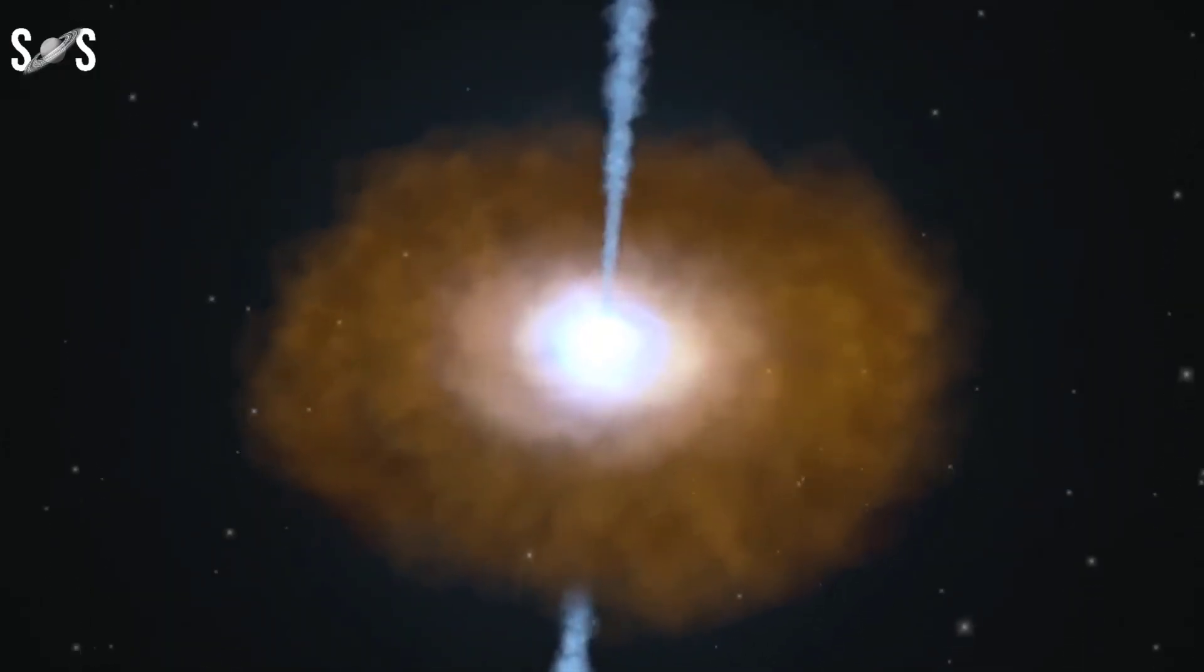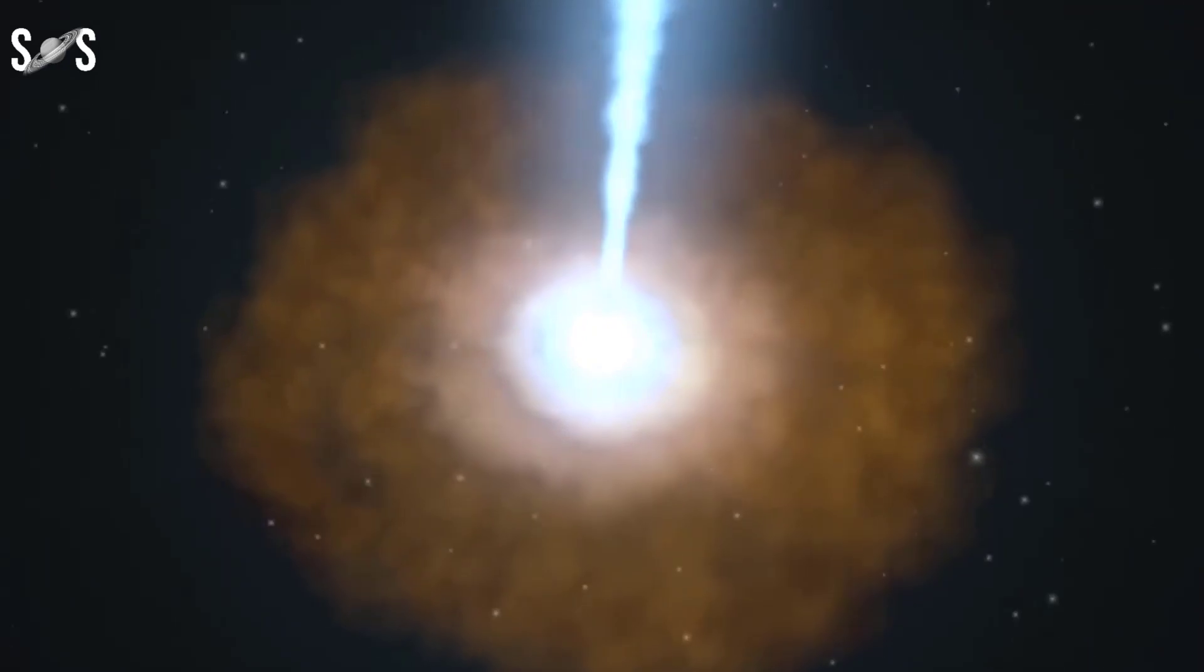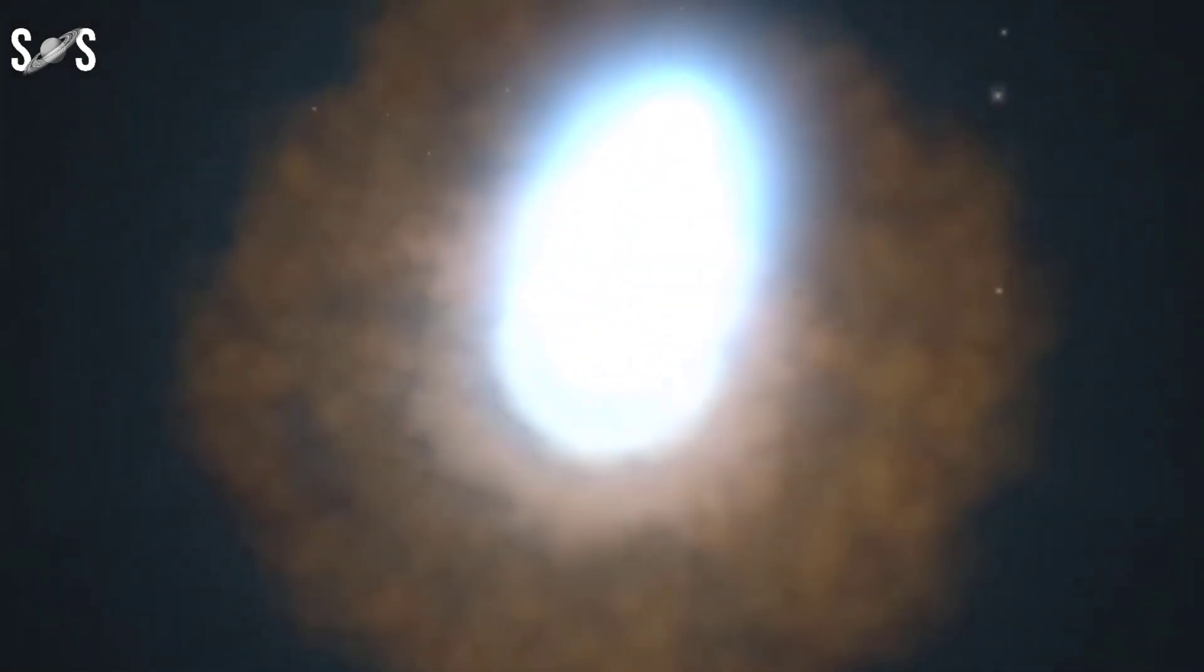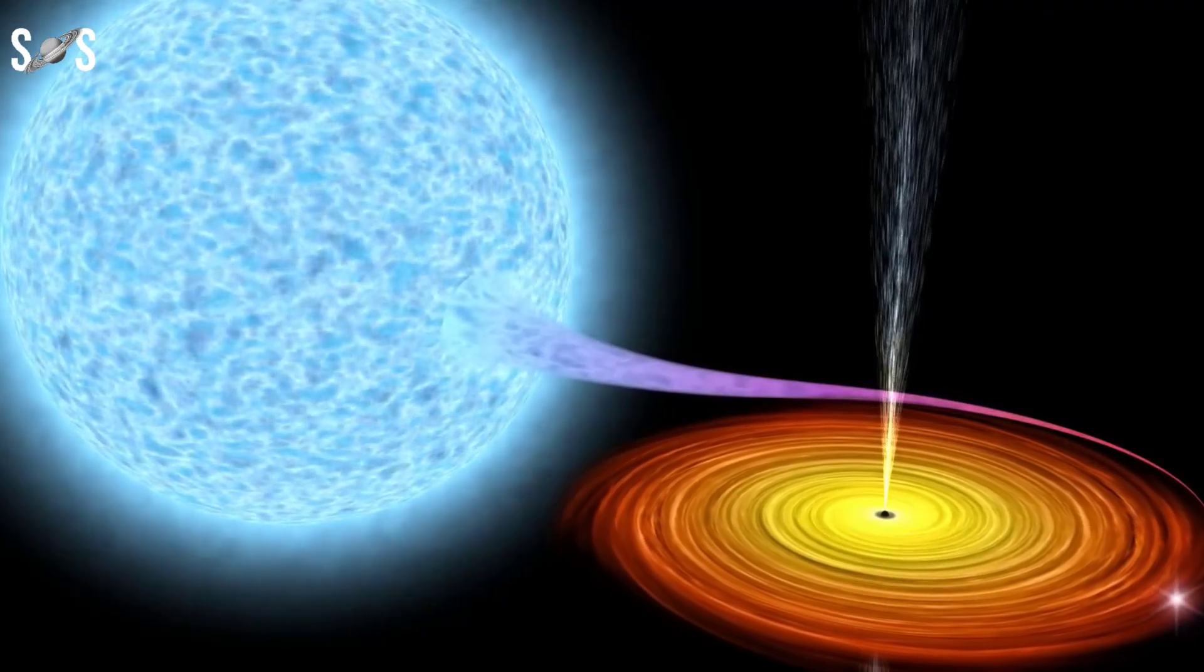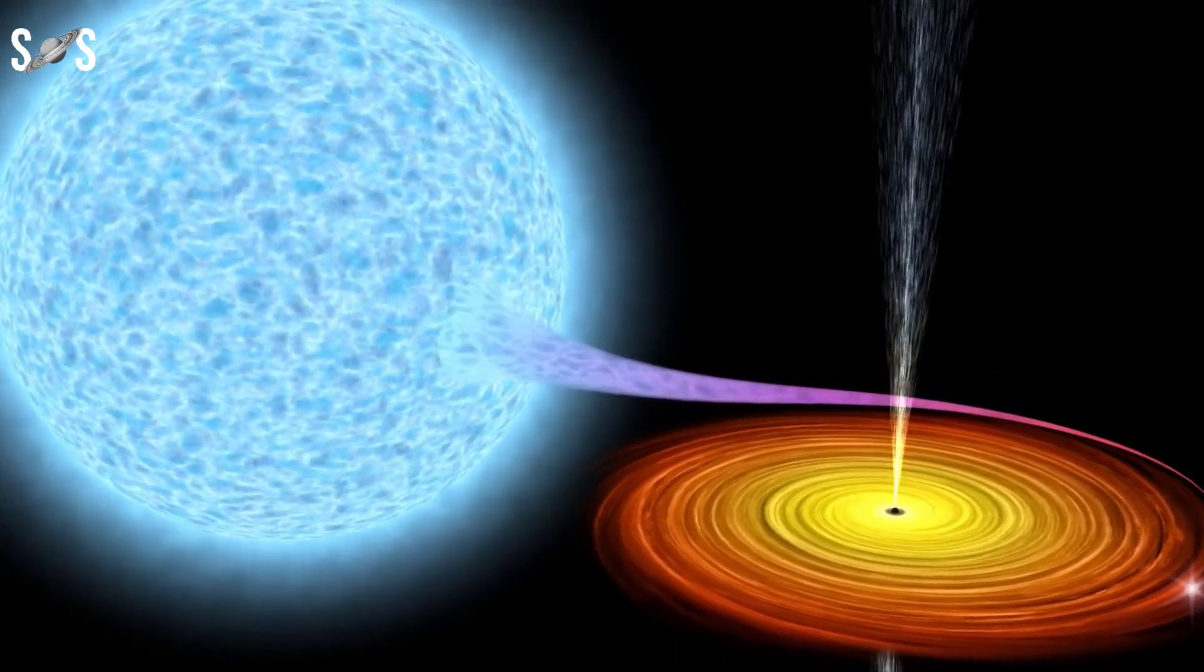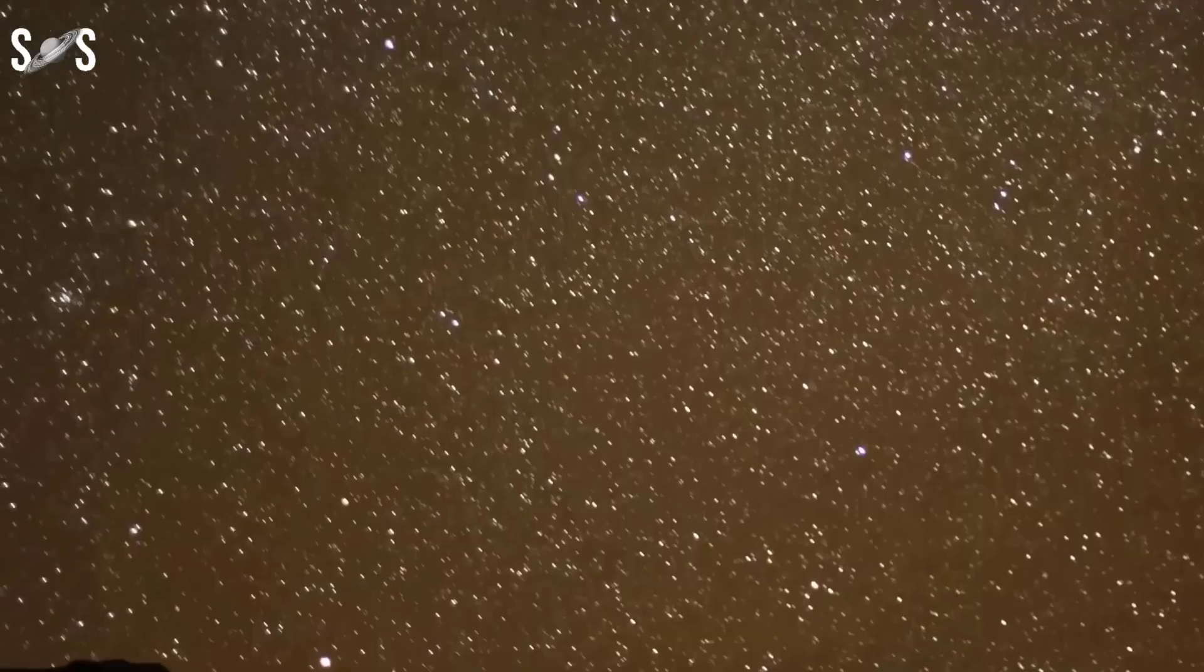In one such stellar but eerie flash, scientists have now spotted a supermassive black hole ripping a star to shreds and devouring it like spaghetti at the center of the galaxy NGC 7392.